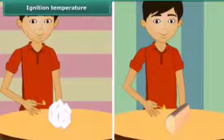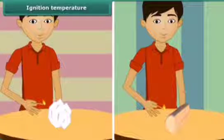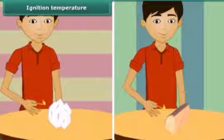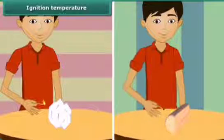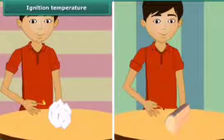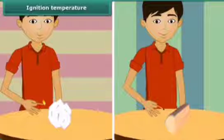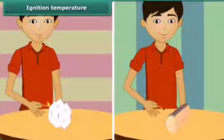We just saw that a paper burns when lighted with a matchstick. Now bring the matchstick close to the piece of wood. The piece of wood does not catch fire. One lighted matchstick is not able to burn the piece of wood, but a piece of paper burnt quickly.